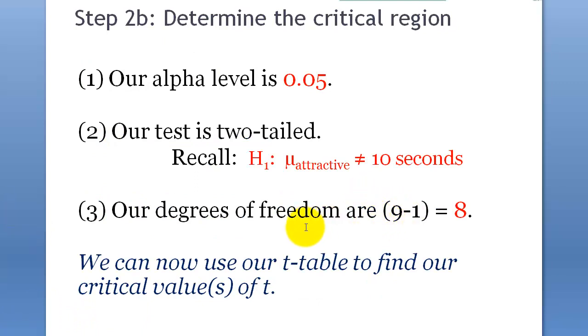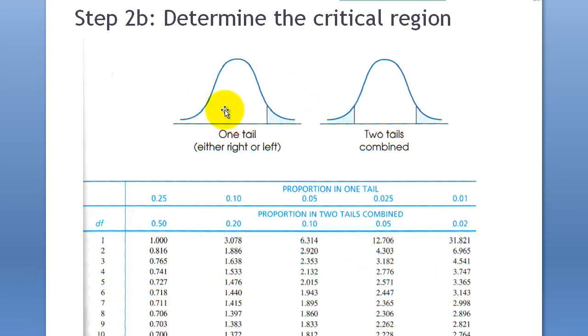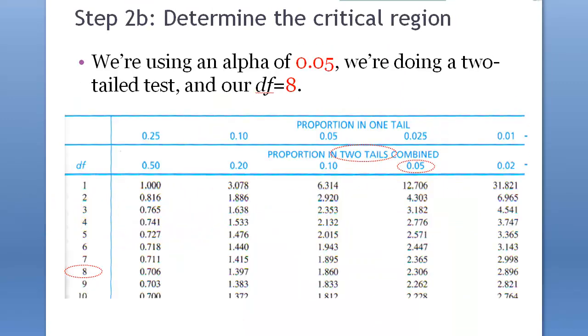First of all, why did we need a degree of freedom? It's probably, that's just because, look at this. Because variance changes, variance is based on samples, that's why, depending on the population size, variance is going to be different. Degree of freedom is representation of population size, because it's n minus 1, right?